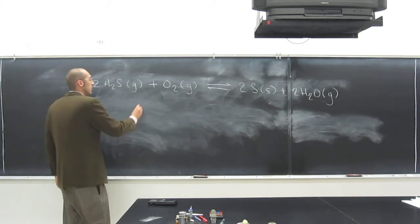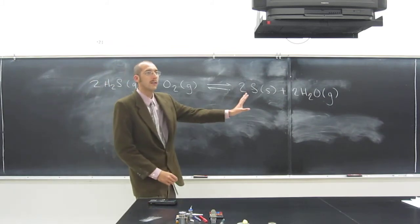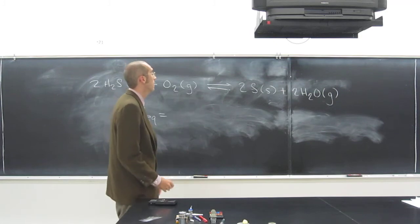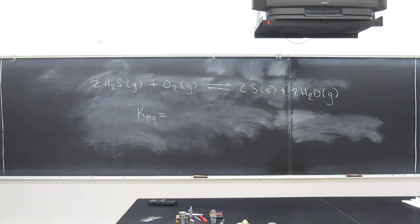So in order to do the equilibrium constant, it's going to be the products over the reactants, but it's going to be the things that are only gaseous and aqueous. So when we just look at that,